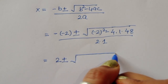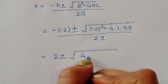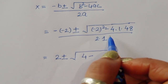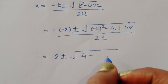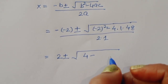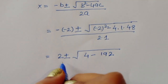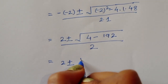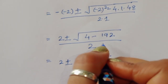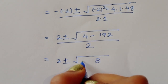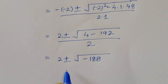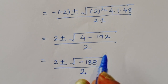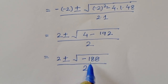Now 2 squared is 4, and 4 times 1 times 48 is 192. So under the square root we have 4 minus 192, which gives minus 188. So x equals 2 plus or minus square root of minus 188, divided by 2.